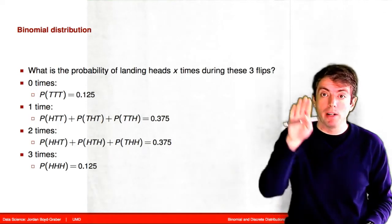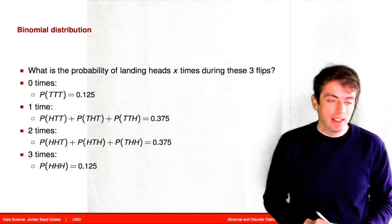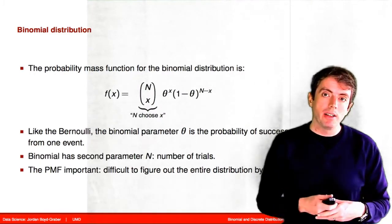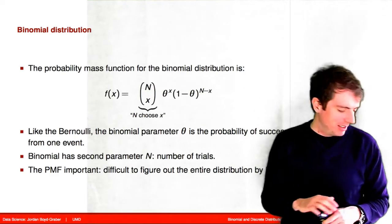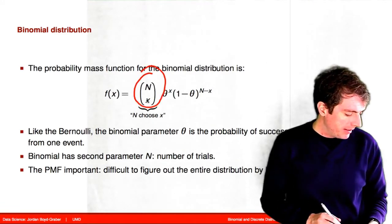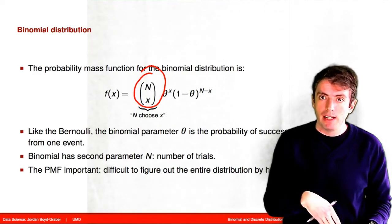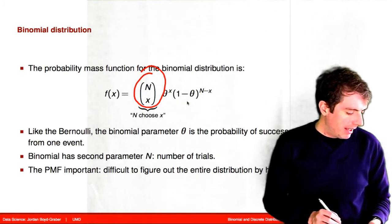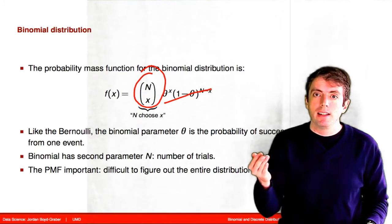This is a little complicated. We don't want to write down the probabilities for all of the events. Can we turn this into a more compact mathematical formula? Luckily, there is a formula we can use to compute the probability of getting x successes out of n trials. The term here — n over x in parentheses — tells us how many ways we can get x successes out of n trials. Then we just compute the probability of getting that many successes and that many failures, just like we did in the Bernoulli distribution.